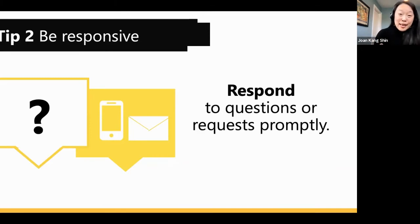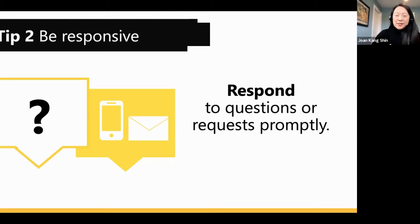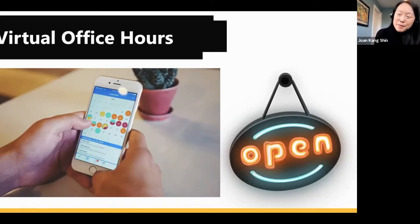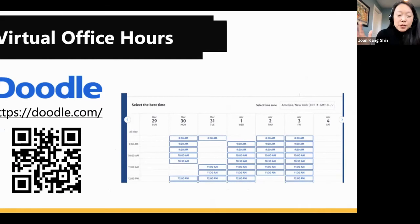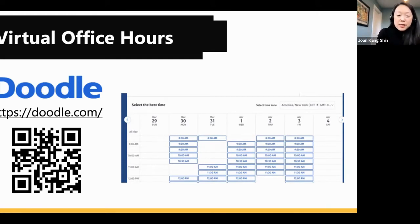When a student has emailed you, they're already at a high level of panic — frantic that they're going to fail or not be able to submit something. So respond quickly. You can also have virtual office hours using video conferencing to go face to face with your students. Doodle is a great app to schedule virtual office hours and make appointments, especially if you have a lot of students.